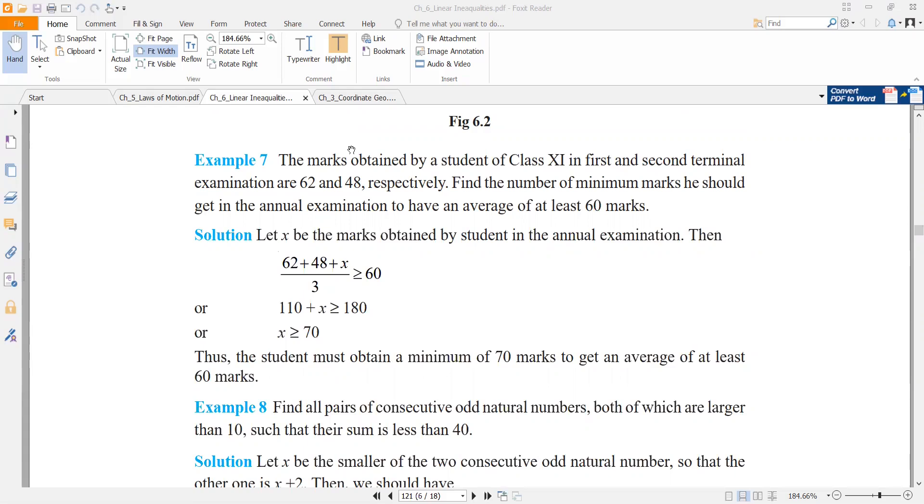There is a situation where there is a student who has two papers and has a score of both papers. One is 62, one is 48.